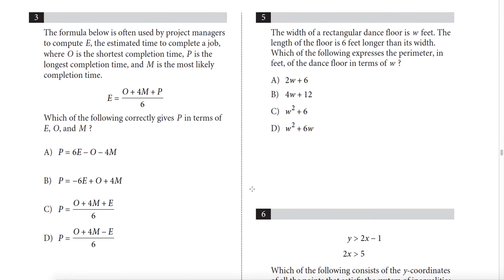Question 3: the formula is used by project managers. We need to solve for P in terms of E, O, and M. We multiply by 6, so 6E appears first. Only answer choice A gives us 6E — nothing else does. Answer: A.